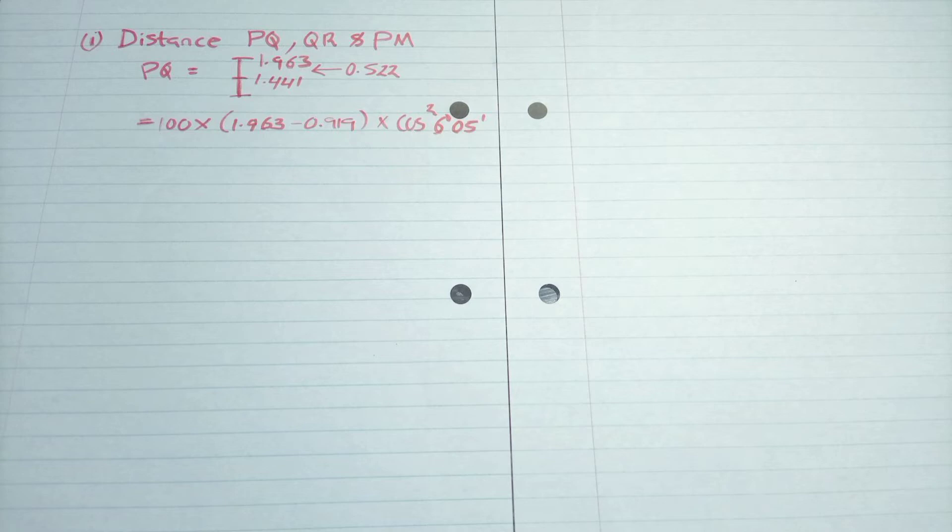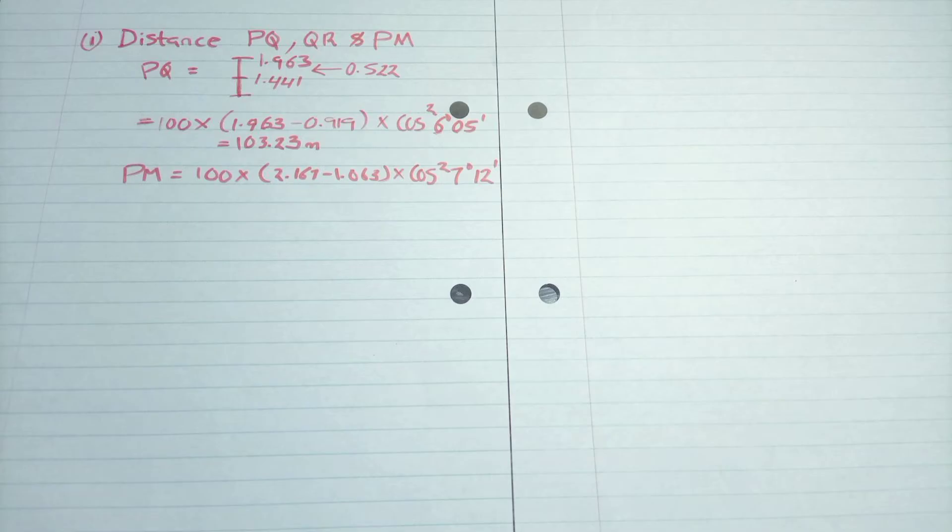So we multiply the values and you remember, so the cos, you first do the cos, then you square the answer to get where we have. So for P-M, we also do the same, so it's 100 times 2.167 minus the last reading, which also you'll have to calculate it by finding the difference of the top and the middle.